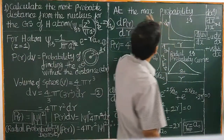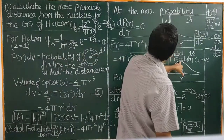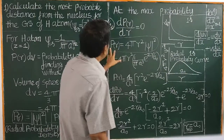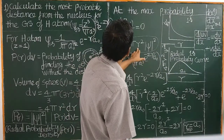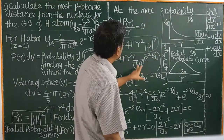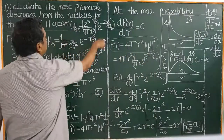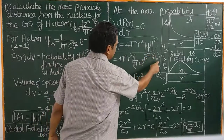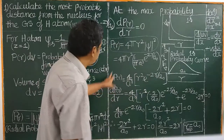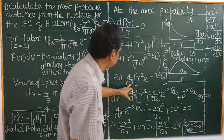Mathematically, at maximum probability, dP(r)/dr = 0. We set up: P(r) = 4πr² × (1/π a₀³) × e^(−2r/a₀). Taking the derivative and applying the product rule with U = r² and V = e^(−2r/a₀): differentiating V gives (−2/a₀)e^(−2r/a₀), and differentiating U gives 2r. Setting dP(r)/dr = 0, we get terms involving the exponential function.